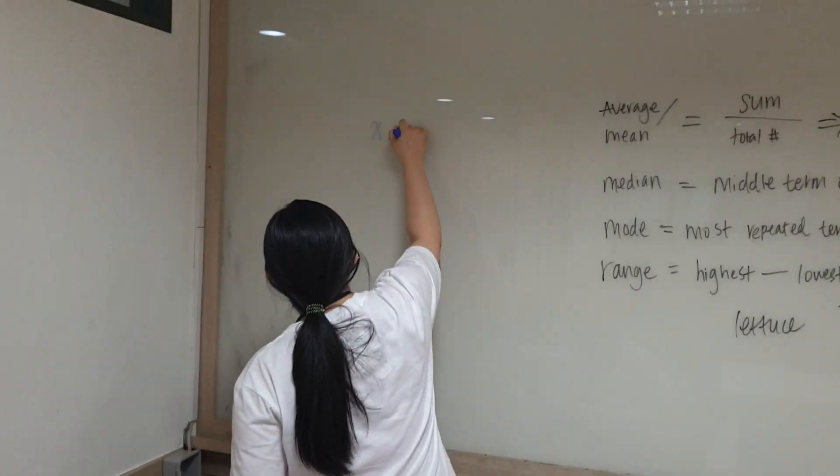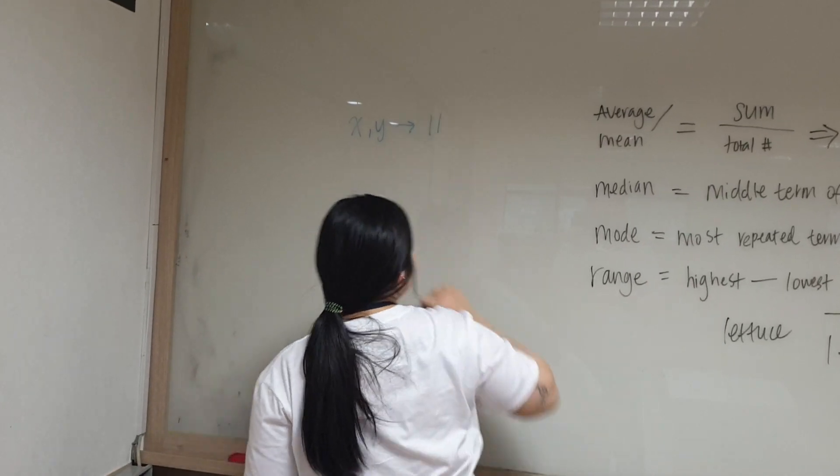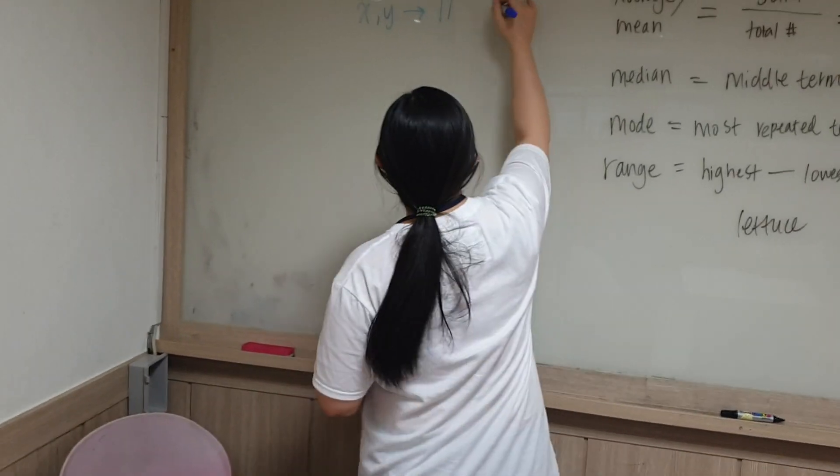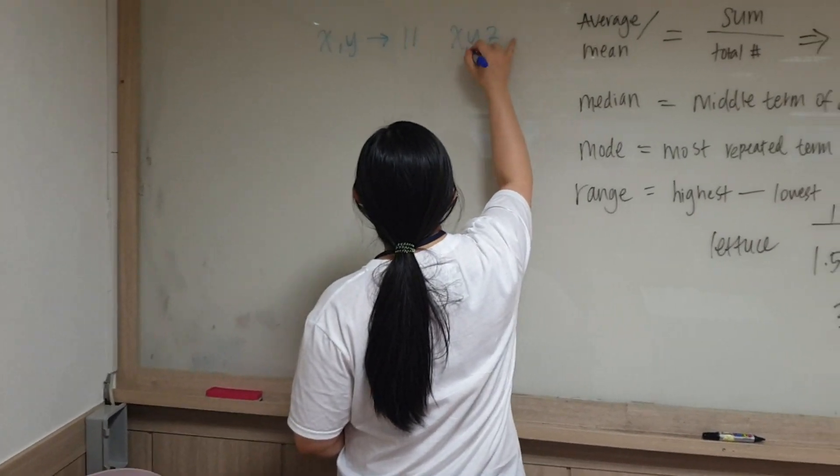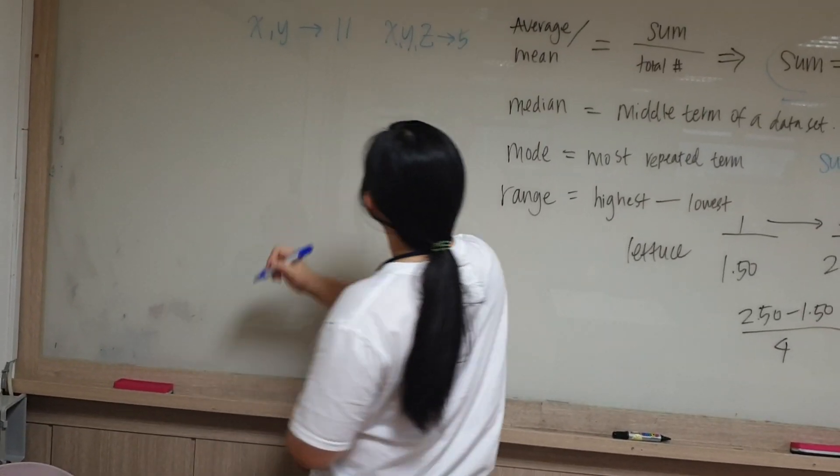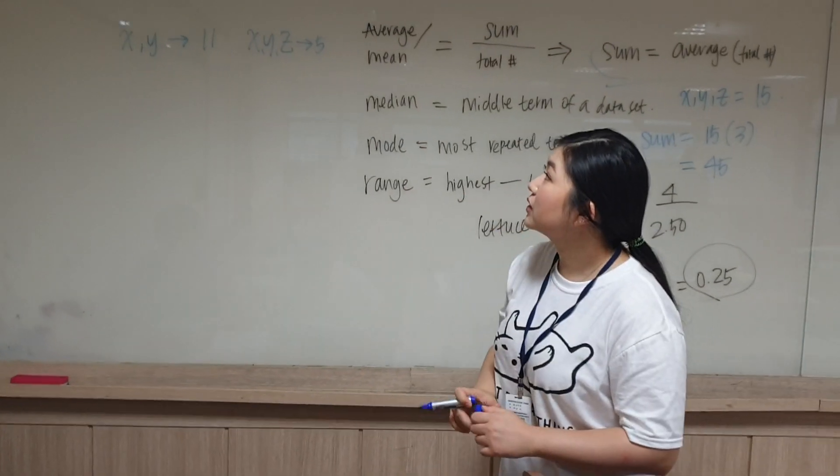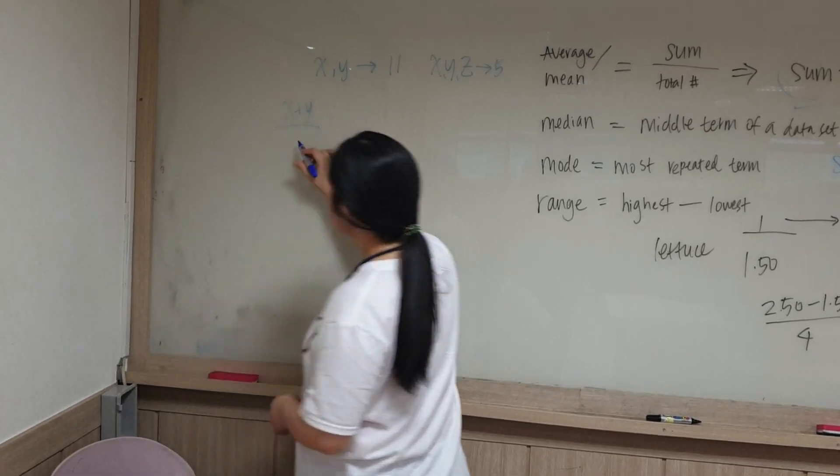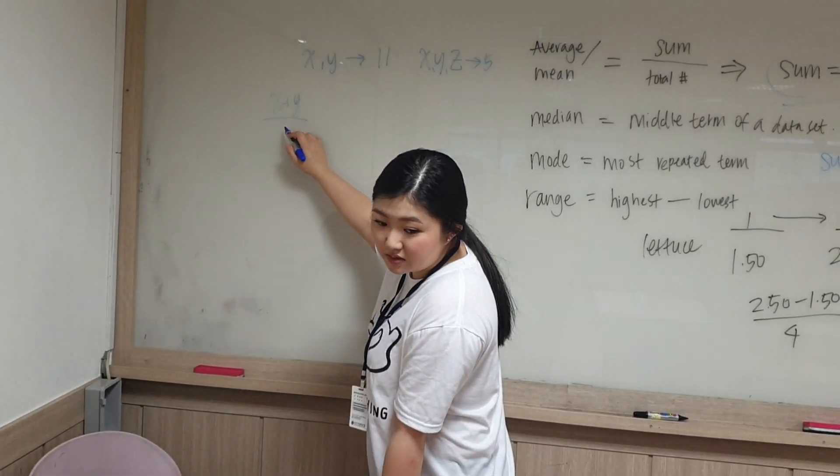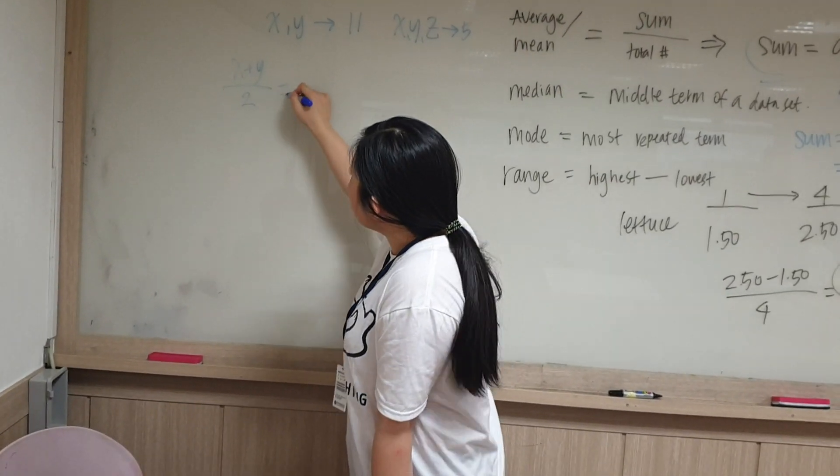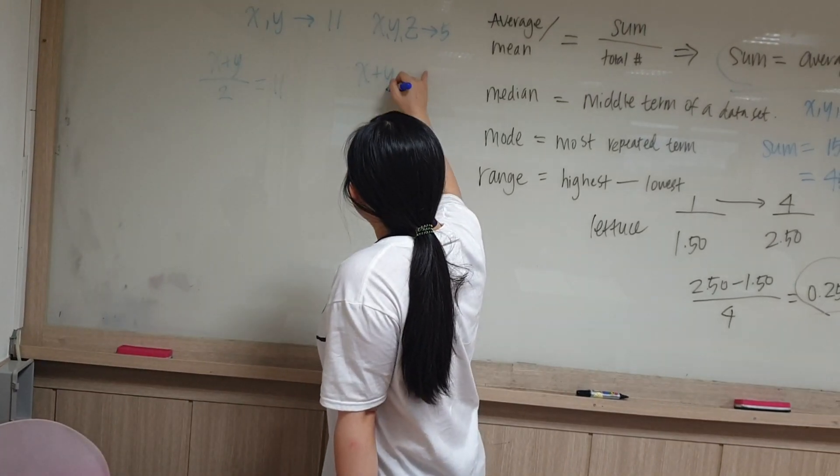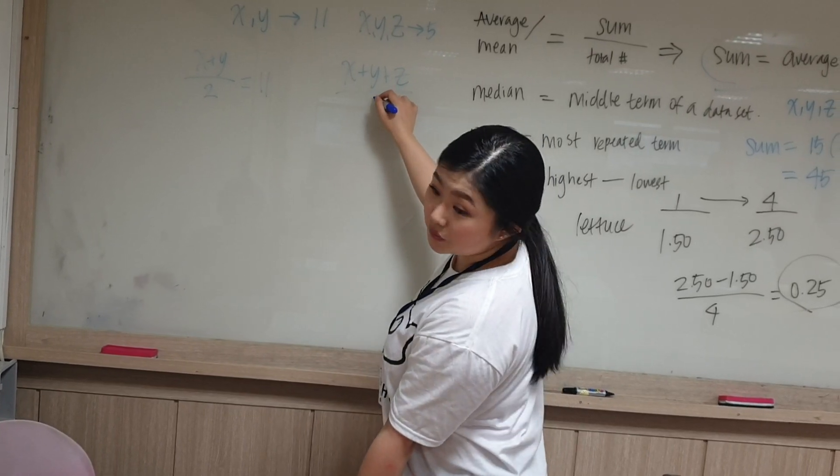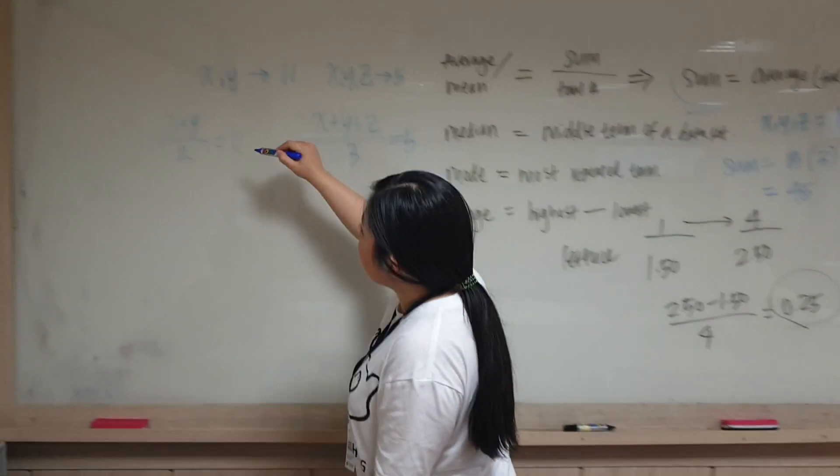The average of x and y is 11, right? And then the average of x, y, and z is five. So when you look at the equations of this, it should be x plus y divided by the terms - and how many terms are there for x and y? Just two. That equals 11. And in this case it's x plus y plus z divided by how many terms? Three equals five. And if you look at there, there is an x plus y and then there's an x plus y. So you don't need to know what x and y are individually. You just need to know what x and y are as a sum.